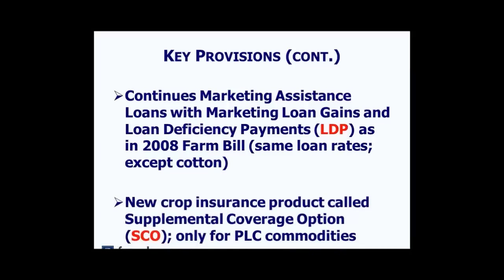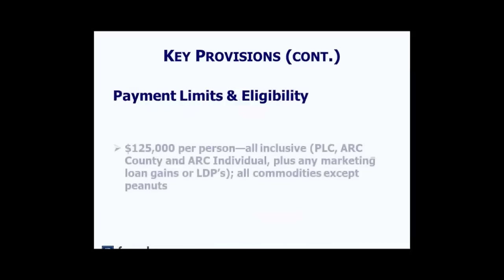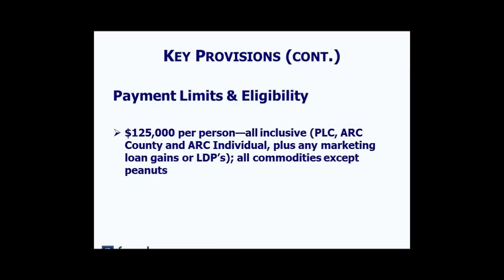You should be aware there is a new crop insurance product called the Supplemental Coverage Option, or SCO, however that program is available only for those commodities in the Price Loss Coverage Program. Payment limits for this Farm Bill are capped at $125,000 per person — that is per individual person — and this payment limit is all inclusive. Any payments under PLC or ARC programs, including Marketing Loan Gains or LDPs, will be counted against that cap.